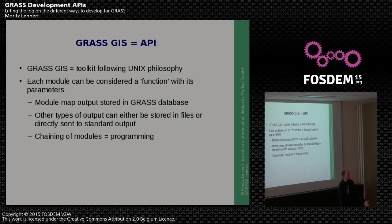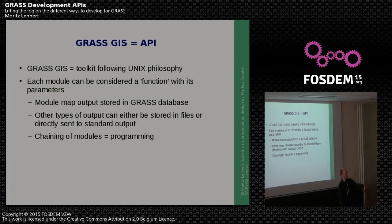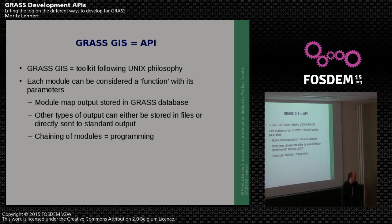When you create output as a map from a GRASS module, it is automatically stored in the GRASS database, or as TIFF files, or whatever format you want. Other types of outputs from modules can be stored either in files, or you can actually pipe them through standard input and standard output flows from one module to another.